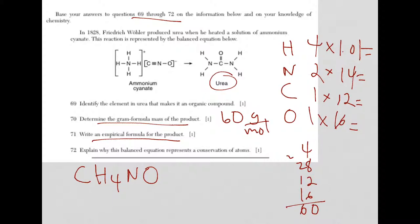Question 72: Explain why this balanced equation represents conservation of atoms. Conservation of atoms means that you start with a certain number of atoms with your reactants and you end up with the exact same number of atoms in the product. The bonding is different, but the atoms on both sides of the equation are the same. I have four hydrogens, two nitrogens, one carbon, and one oxygen to start, and I have the same number in the products.